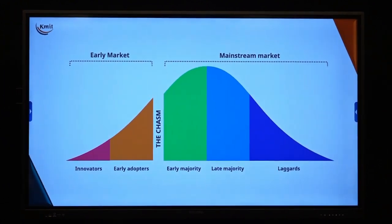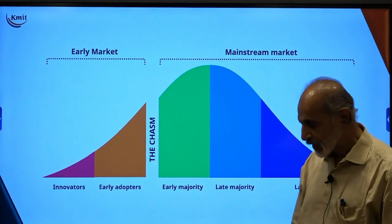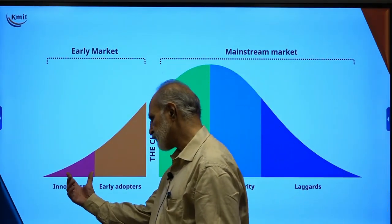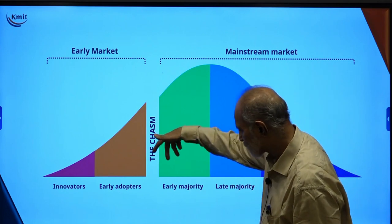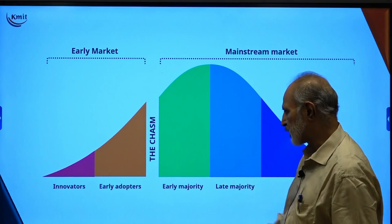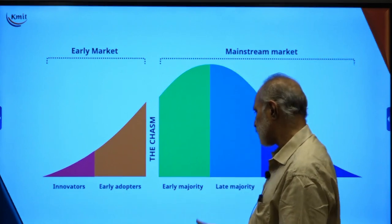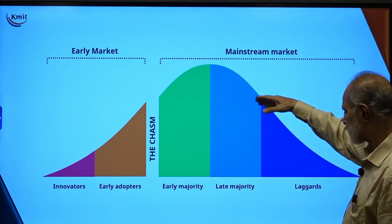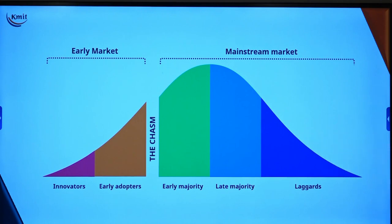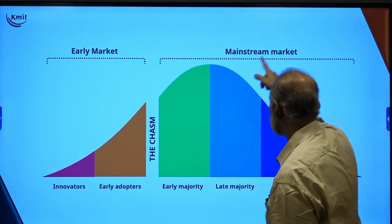There is a diagram showing innovation ideas in terms of early market and mainstream market. Early market innovations are slowly happening with early adopters, as people are adopting the technology. There is a chasm — a gap between the early market and mainstream market — a vertical divide generated by the market or disruptive technology. Early adopters are in the early market, then the early majority moves into the mainstream, slowly growing the user base until it becomes the laggard stage.